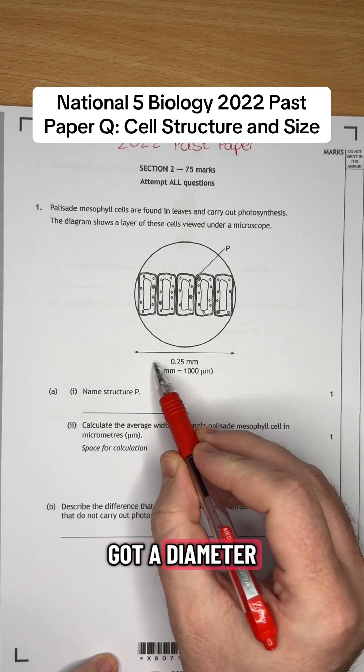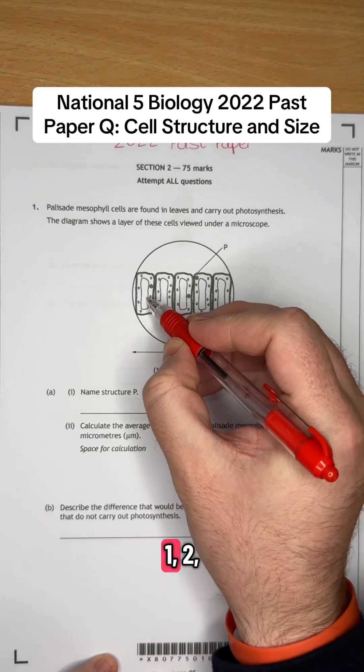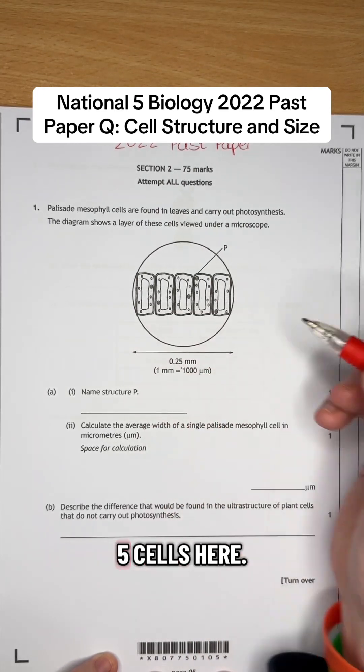So we've got a diameter there of 0.25 and we've got 1, 2, 3, 4, 5 cells there.